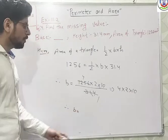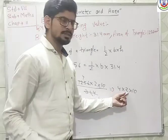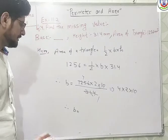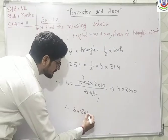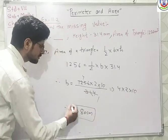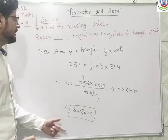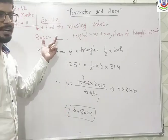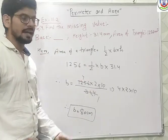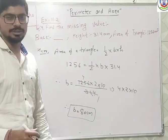4 multiplied by 2 is 8, and 8 multiplied by 10 is 80 cm. So B, meaning the base of the given triangle, is 80 cm.